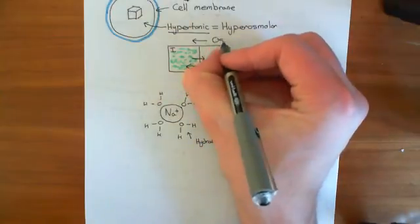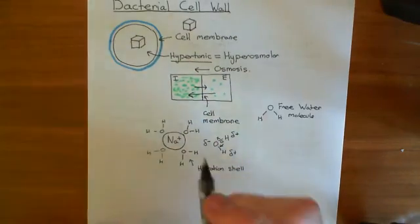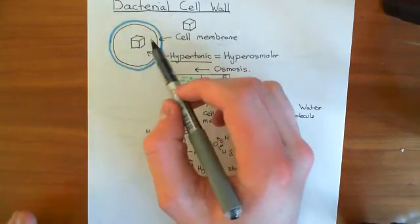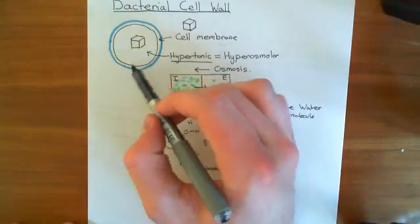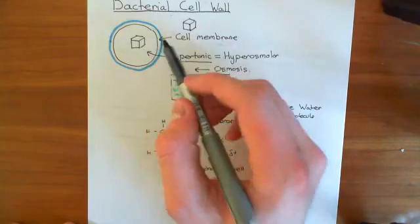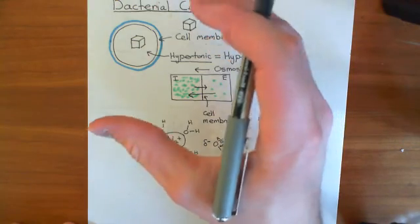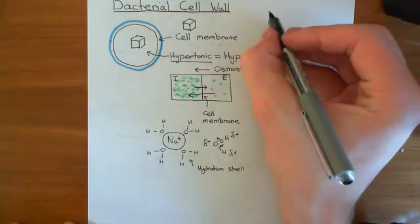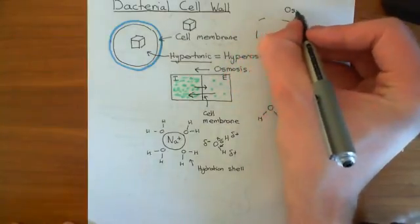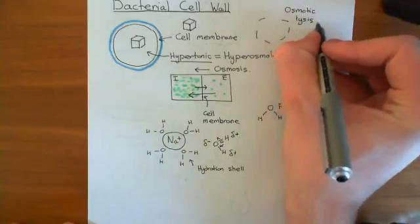Water moving from the extracellular into the intracellular compartment is going to boost the volume of the cell — the cell is going to blow up like a balloon. What would happen is osmotic lysis, because the cell volume would increase so much that it bursts the cell membrane. The cell membrane would split up and fragment, and you'd get osmotic lysis — the cell would lose all structural integrity.